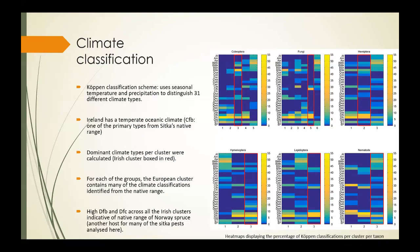For example, for the fungi group, the dominant Köppen classifications are those where Sitka spruce is found—Cfb at 25%, Dfb at 29%, and Dfc at 34%. This suggests a really strong relationship that exists between the species included in the analysis and their Picea hosts. High Dfb, which is humid continental, and Dfc, which is subarctic, across all of the Irish clusters are also indicative of the native range of Norway spruce, another host for many of the Sitka pests that were included in the original pest list analyzed here.